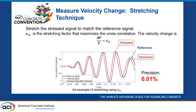Since the velocity changes are very small under stress change, picking up the first arrival cannot reach such precision. Here, we use the stretching method to calculate the relative velocity change. In this figure, the blue line is from the unstressed state and the red line is from the stressed state. The red dashed line is stretched from the red line at the stretching factor epsilon_m, and it almost overlaps the blue line. The relative velocity change dv/v is equal to the stretching factor epsilon_m. Using this method, we can reach a precision of 0.01%.